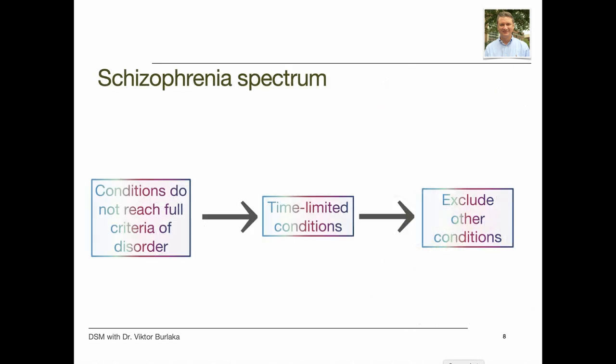For the schizophrenia spectrum, clinicians should first consider conditions that do not reach full criteria for a psychotic disorder and conditions limited to one domain of psychopathology. Then they should consider time-limited conditions. Finally, the diagnosis of a schizophrenia spectrum disorder requires the exclusion of another condition that may give rise to psychosis.